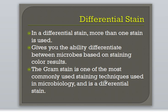Differential staining techniques require two or more stains and have several steps to complete. Differential staining allows one to differentiate between specific cell characteristics. In bacteria, differential stains are commonly used to determine the cell wall structure. Two commonly used differential staining processes for bacteria are gram stain and acid-fast stain, both used for identifying cell wall characteristics.